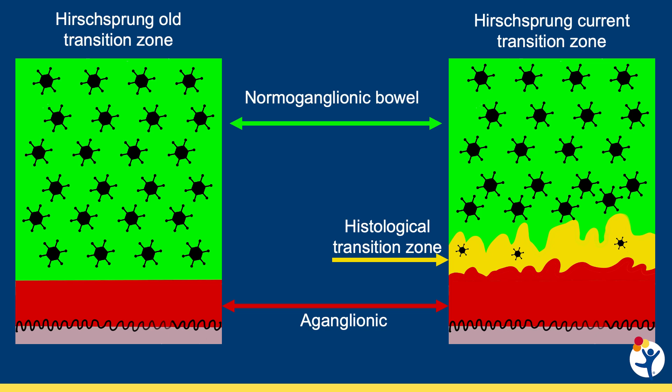In Hirschsprung's disease, the aganglionic bowel changes to normoganglionic bowel. This transformation does not occur in a sharp line separating the aganglionic from the normoganglionic bowel, as was once believed. This transformation occurs in a segment of the intestine that is on average 5 cm long, known as the histological transition zone. In the histological transition zone, ganglion cells gradually appear until they populate the entire circumference of the intestine, and the nerve hypertrophy disappears.